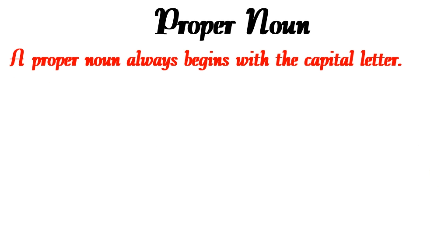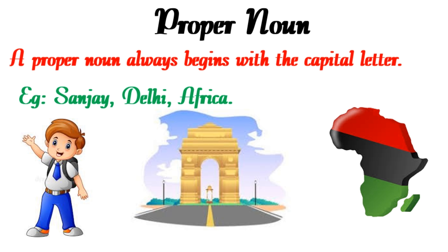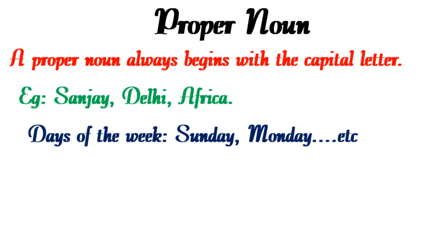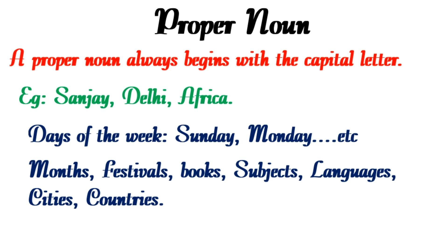A few points to remember for a proper noun: a proper noun always begins with a capital letter. For example, Sanjay (name of a boy), Delhi (name of a city), Africa (name of a country). The names of days of the week such as Sunday, Monday, and months such as March, April, as well as specific festivals, books, subjects, languages, cities, and countries are all proper nouns and should always begin with a capital letter.